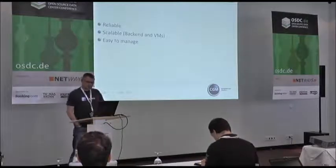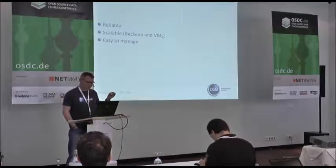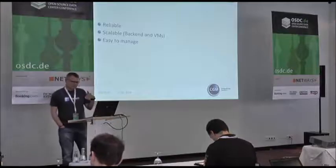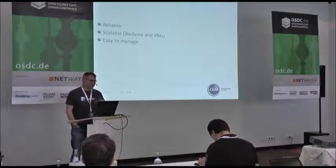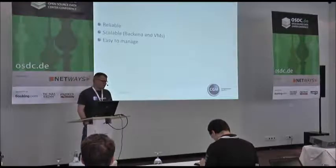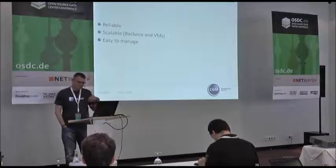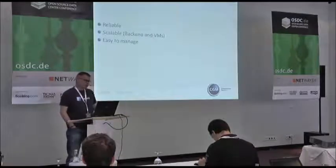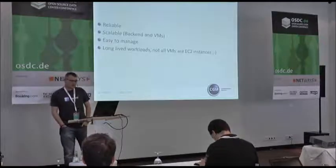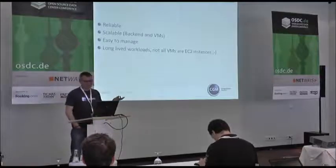Easy to manage. Reliability and easy to manage are two things which go closely together, because if something is hard to manage it's very error-prone. If you don't deploy automation, humans make errors. Looking at our statistics, 80% of errors are human errors. Also, I talked about enterprise workloads — long-lived workloads. Not all virtual machines are easy to replace as instances.